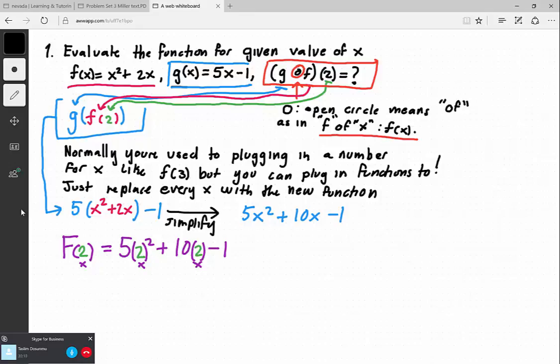Now evaluating this, what we end up with is big F of 2 is equal to 5 times 2 squared, which is 4, because 2 squared is 4, so 5 times 4, plus 10 times 2, which is 20, minus 1.